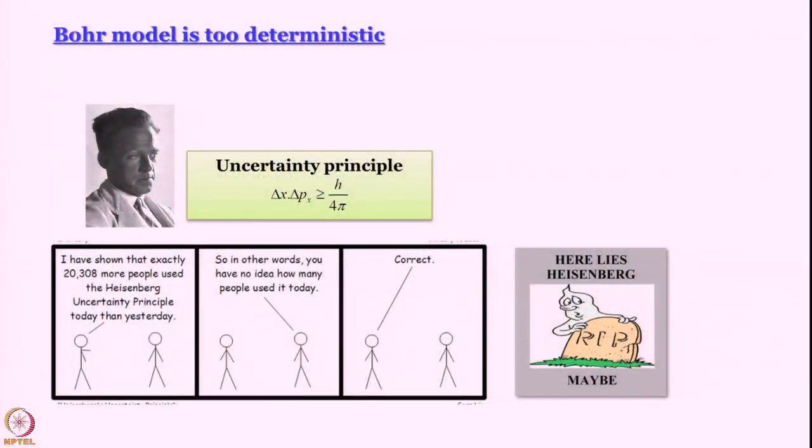Now that we know that Bohr model is not going to work because it violates uncertainty principle, the field is set for us to discuss Schrodinger equation. And as you will see, even Schrodinger equation has its beginning in classical mechanics. As we said, Bohr model is too deterministic.